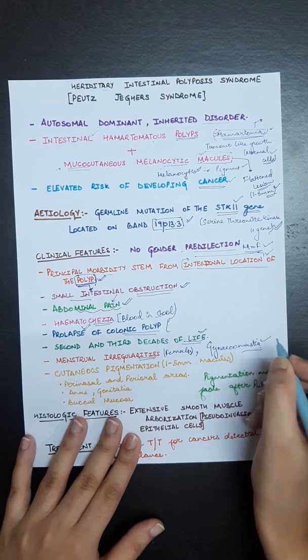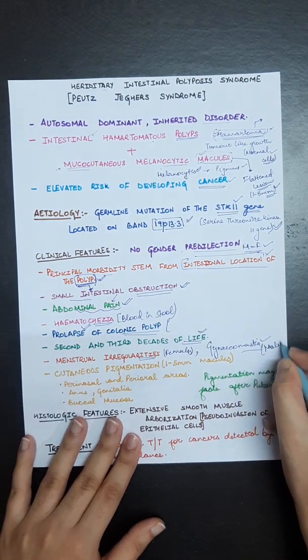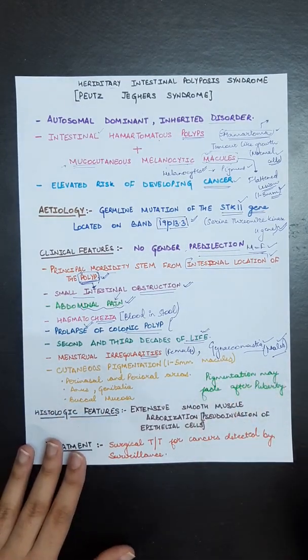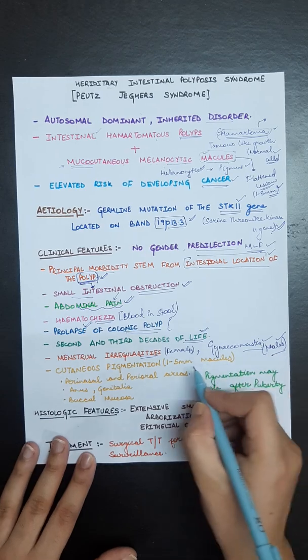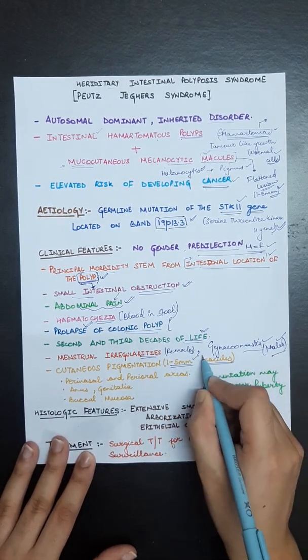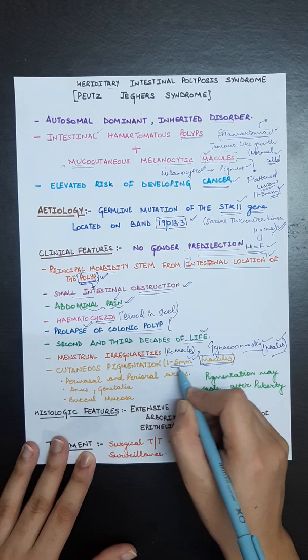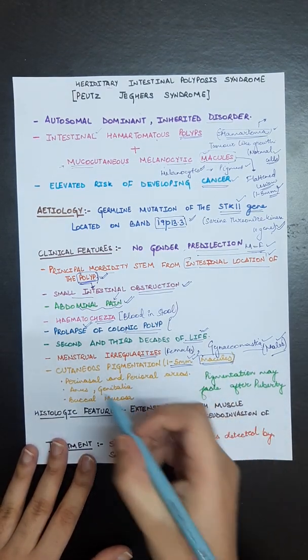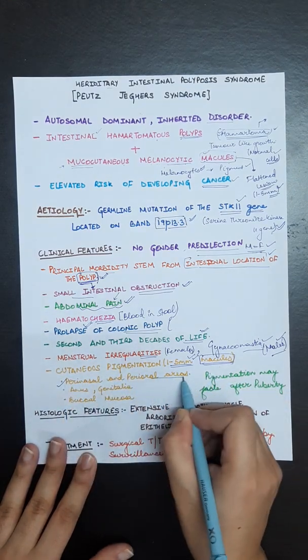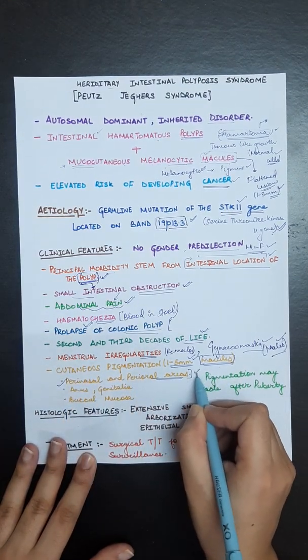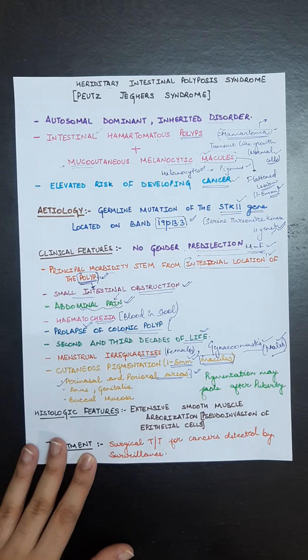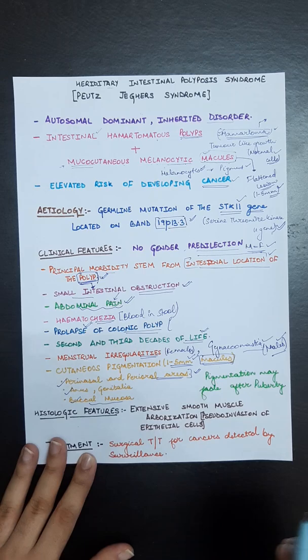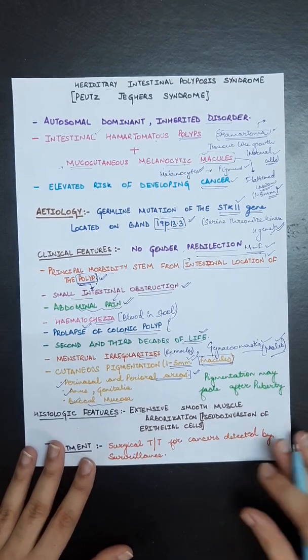Now the cutaneous pigmentation, which has macules one to five millimeters in diameter, will be present on perinasal and perioral areas, genitalia, buccal mucosa, etc. This pigmentation may fade after puberty.